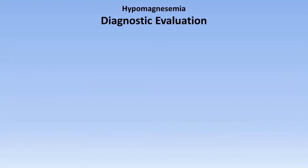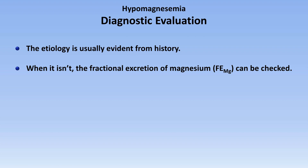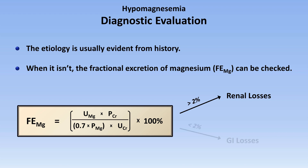Moving on to the diagnostic evaluation of hypomagnesemia, it's actually pretty easy, as the etiology is usually evident from the patient's history. However, if it's not, one can calculate the fractional excretion of magnesium. This is calculated as the product of the urine magnesium concentration and the plasma creatinine, divided by 0.7 times the plasma magnesium times the urine creatinine, all multiplied by 100%. The 0.7 term accounts for the fact that only about 70% of circulating magnesium is free and able to be filtered across the glomerulus. If the fractional excretion of magnesium is greater than 2%, it suggests excessive renal losses; if it's less than 2%, it suggests GI losses. This calculation is rarely done in routine clinical practice.